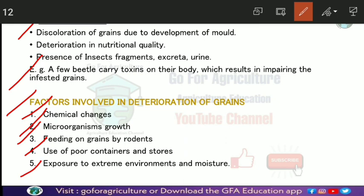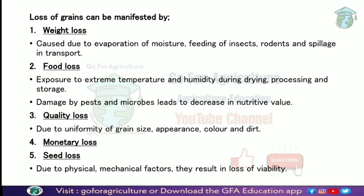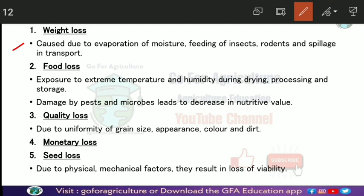Environmental exposure — including high moisture levels leading to fungal growth, and high temperature — affects stored grains. Losses can be manifested as weight loss due to insect and rodent feeding, and also during transportation of grains from one place to another. High temperature combined with reduced humidity during processing and storage periods results in significant food losses.